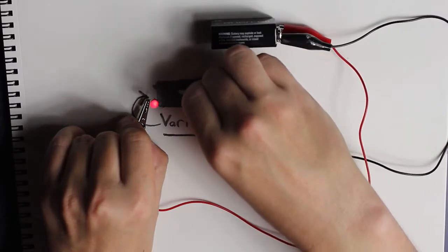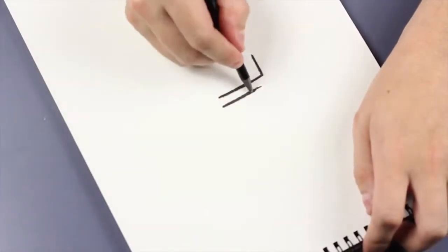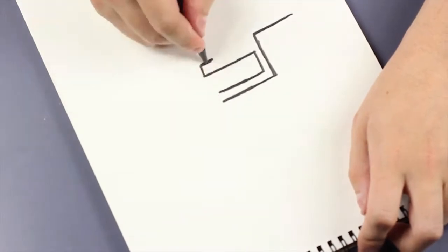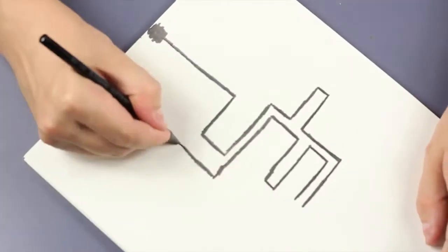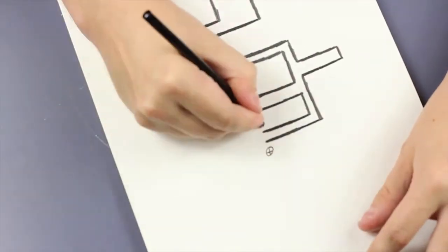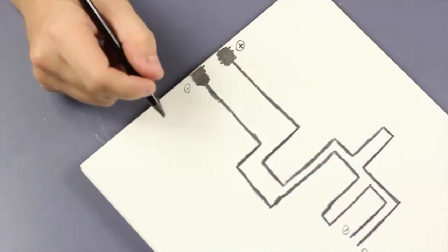But what if we wanted to make an actual circuit out of this? Would the resistive properties prove to be too great, or could we still transfer enough energy to light and power it up? So let's give it a try and find out.